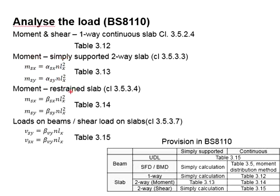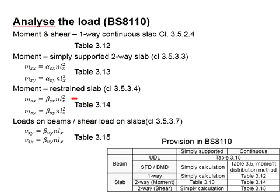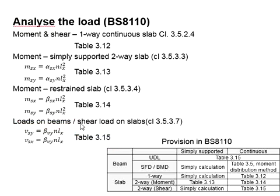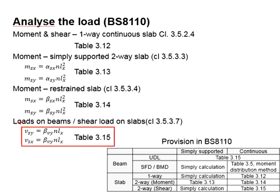For a two-way restrained slab, tables 3.14 and 3.15 are referred. Table 3.14 is used to calculate the moment acting on the slab, while table 3.15 is used to determine the shear loads acting on the slab. This table can also be used to determine the load acting on the beam.